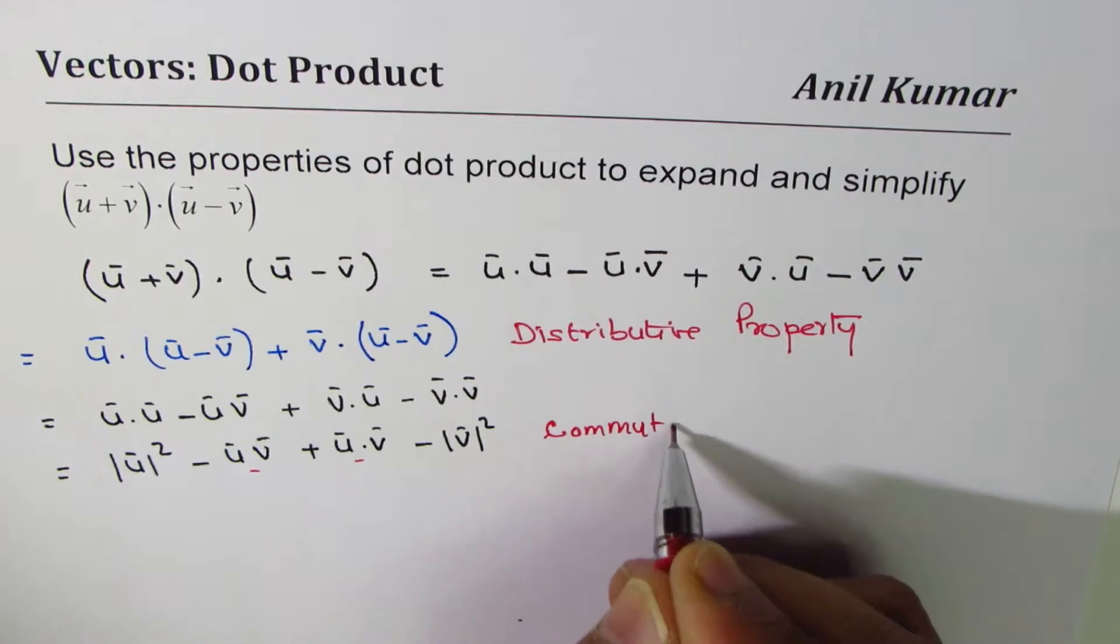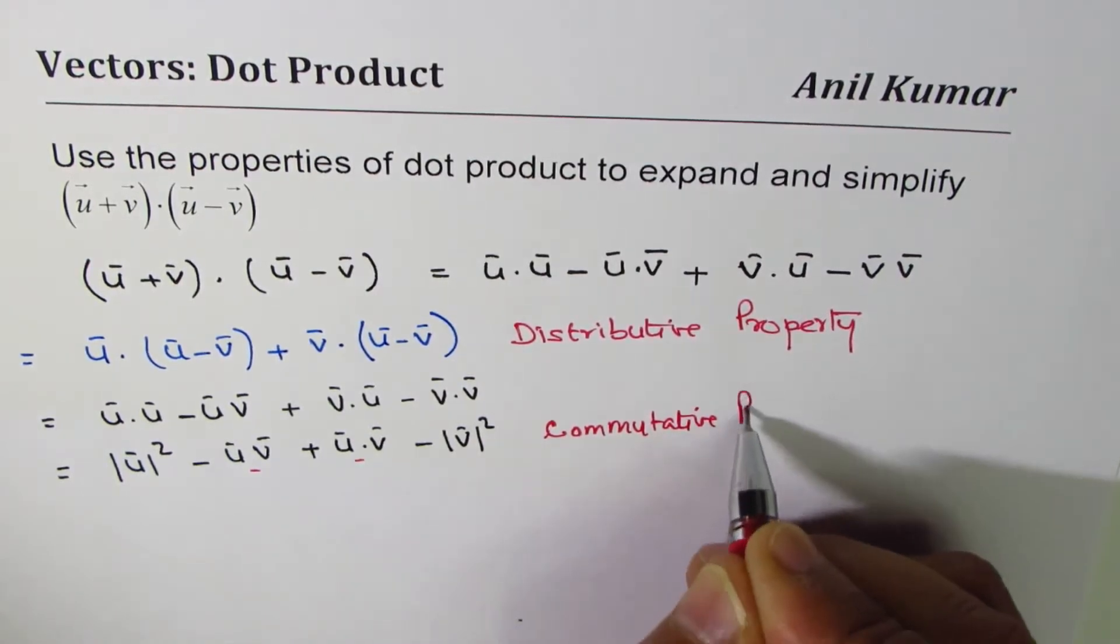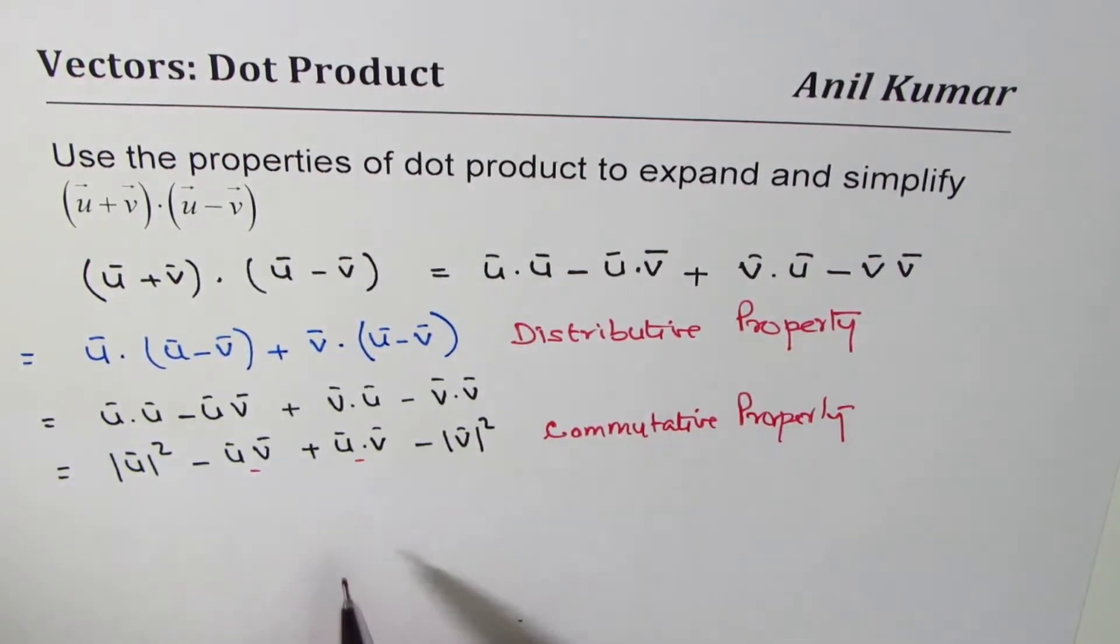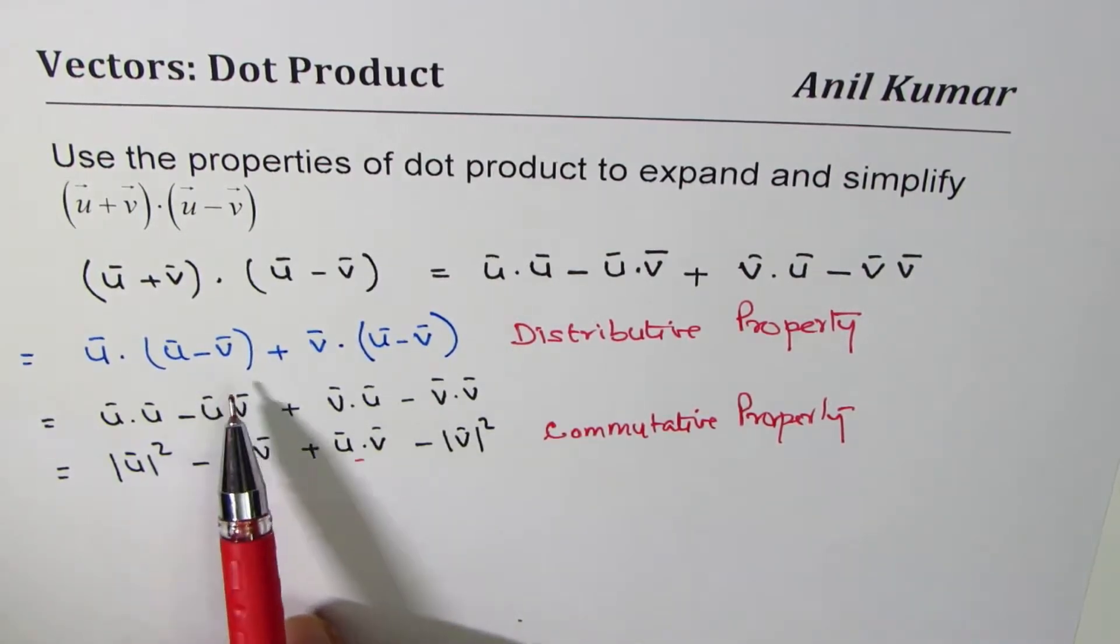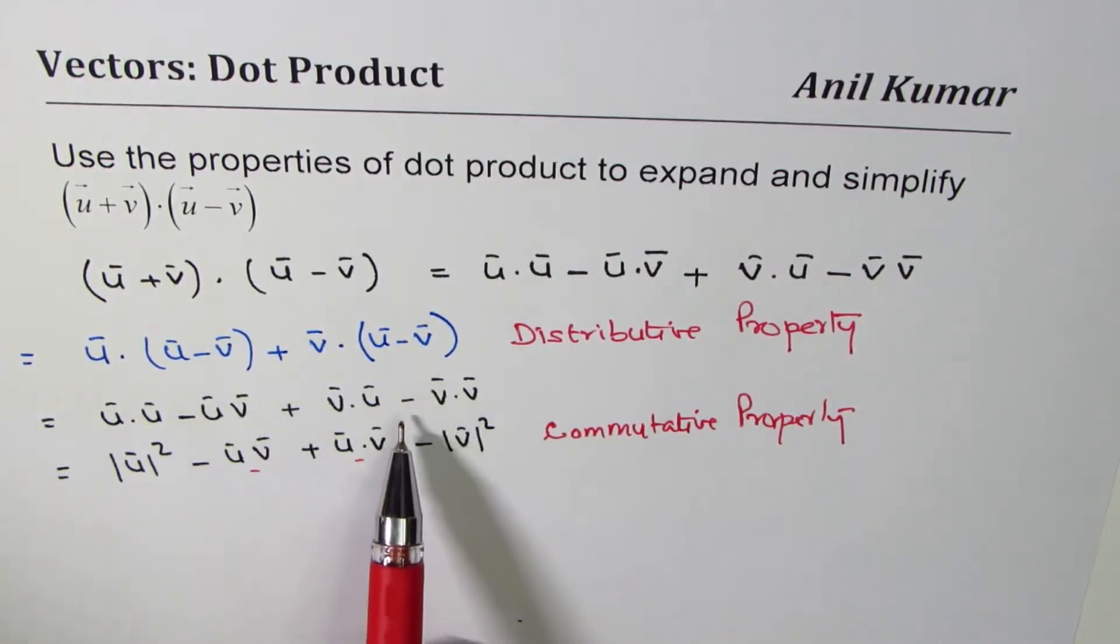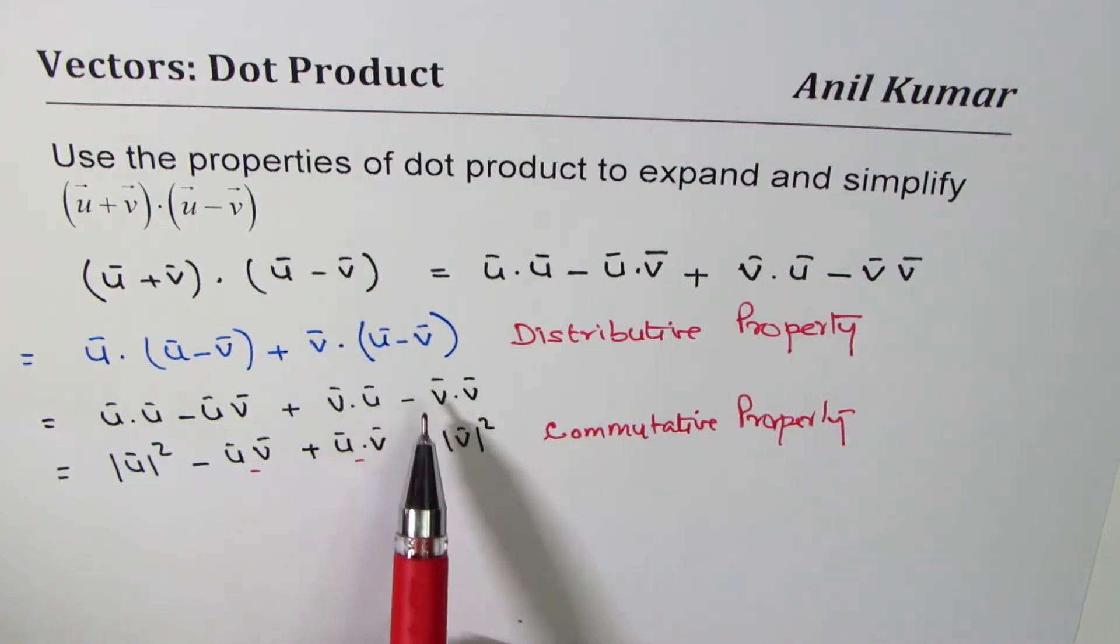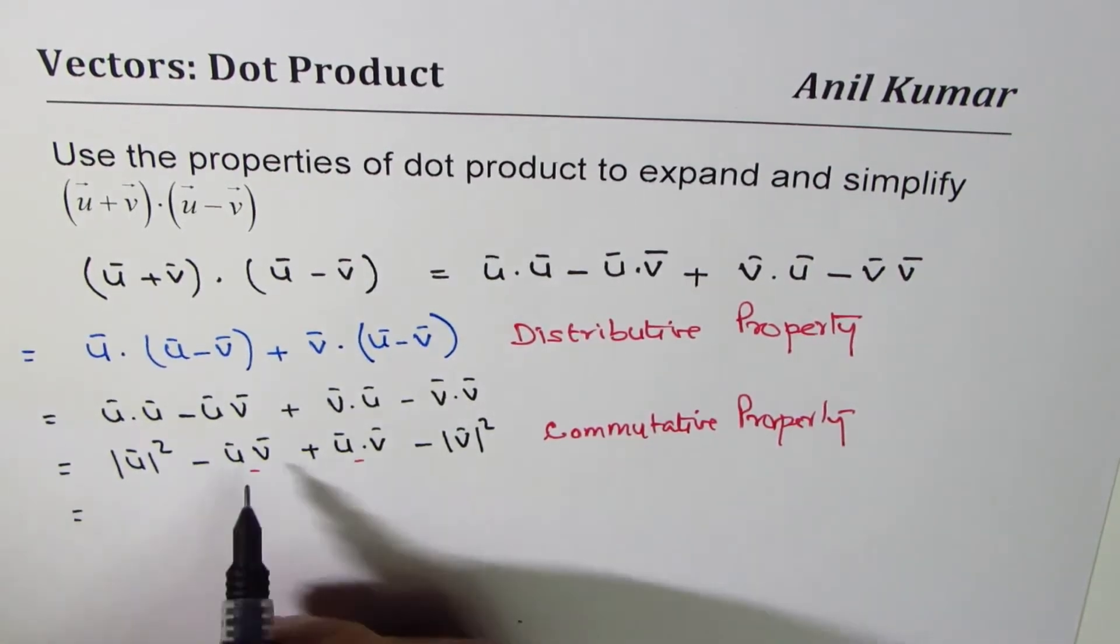In this case, commutative property - in my case what I did was I wrote the sign as such. I could have multiplied with the sign and used associative property also. So a step has been missed here. Anyway, we'll continue.